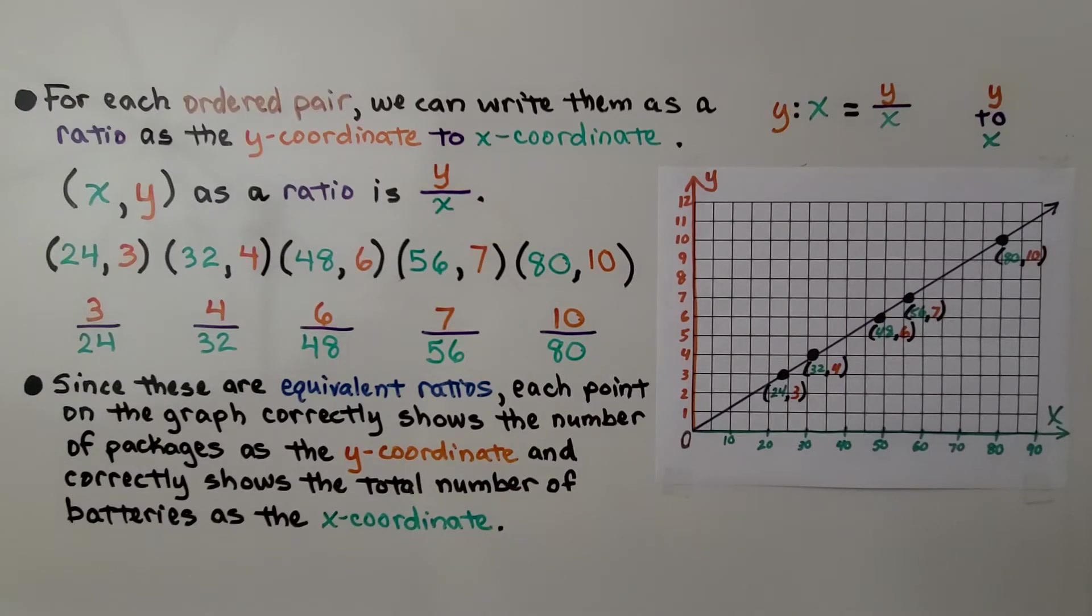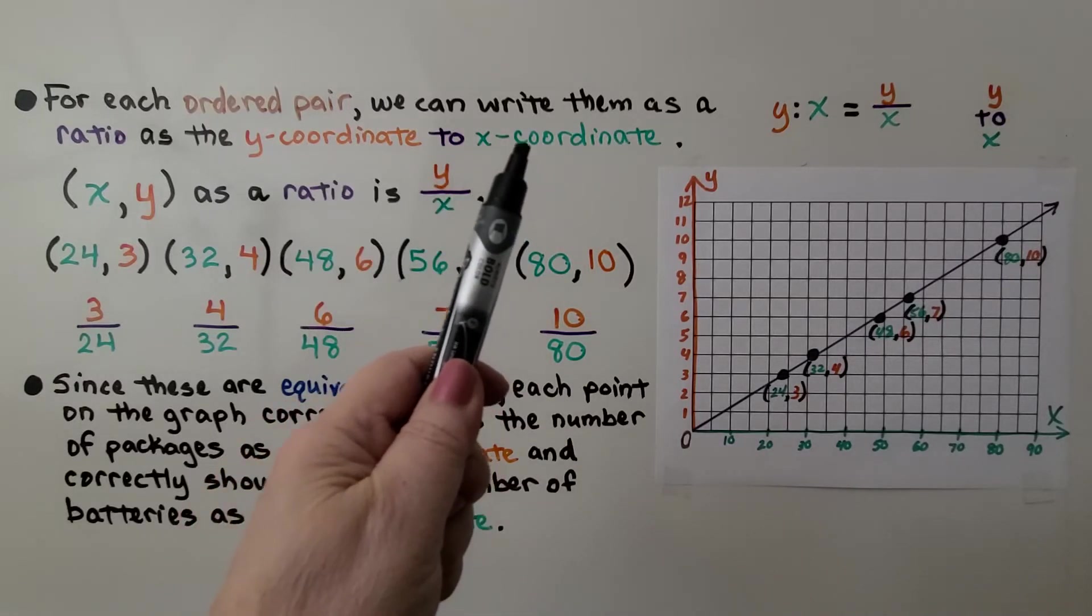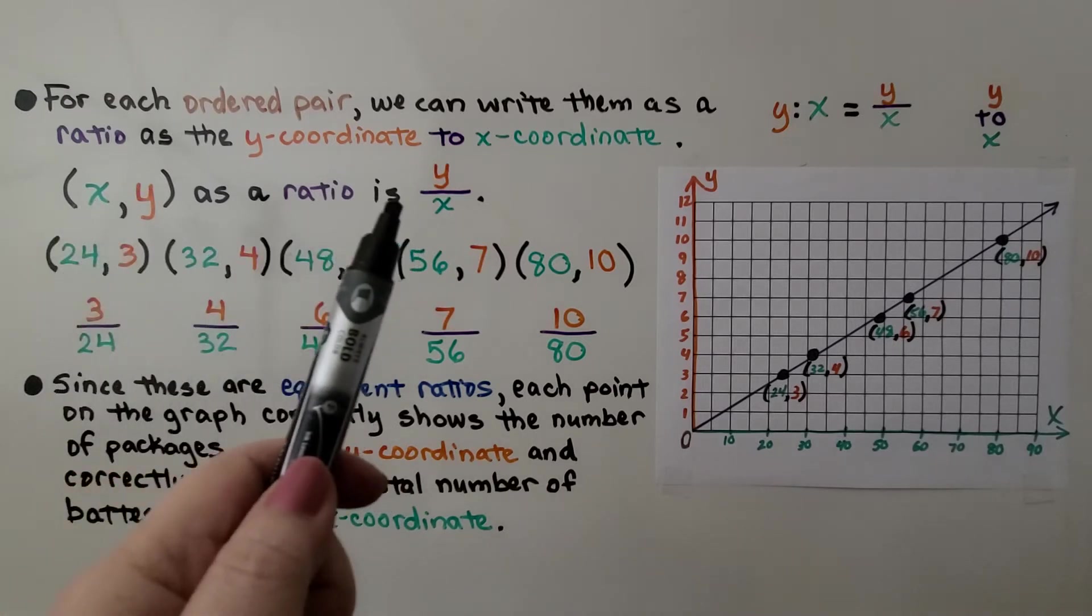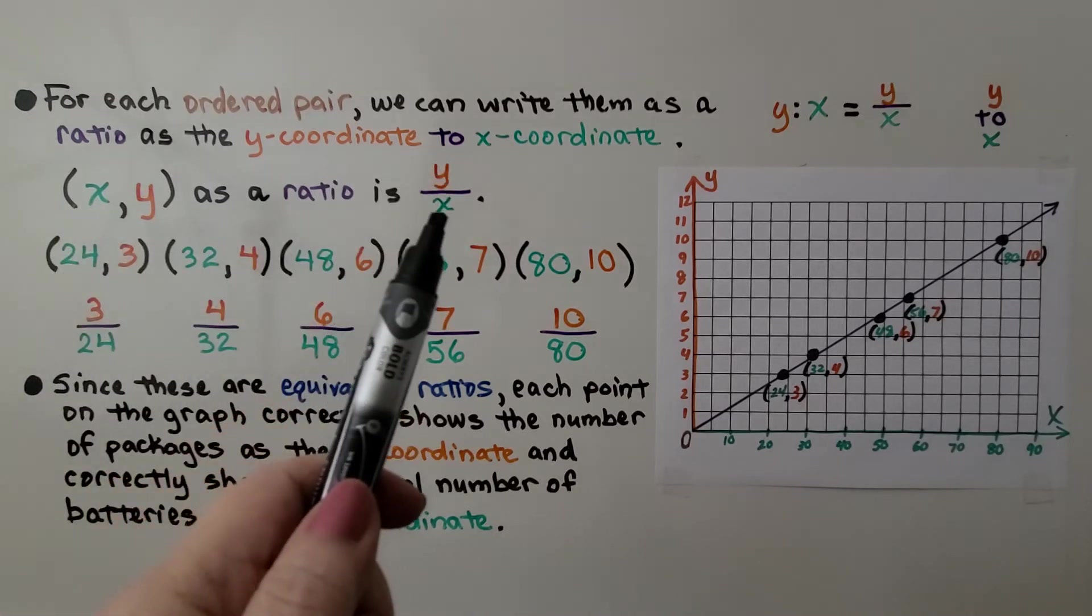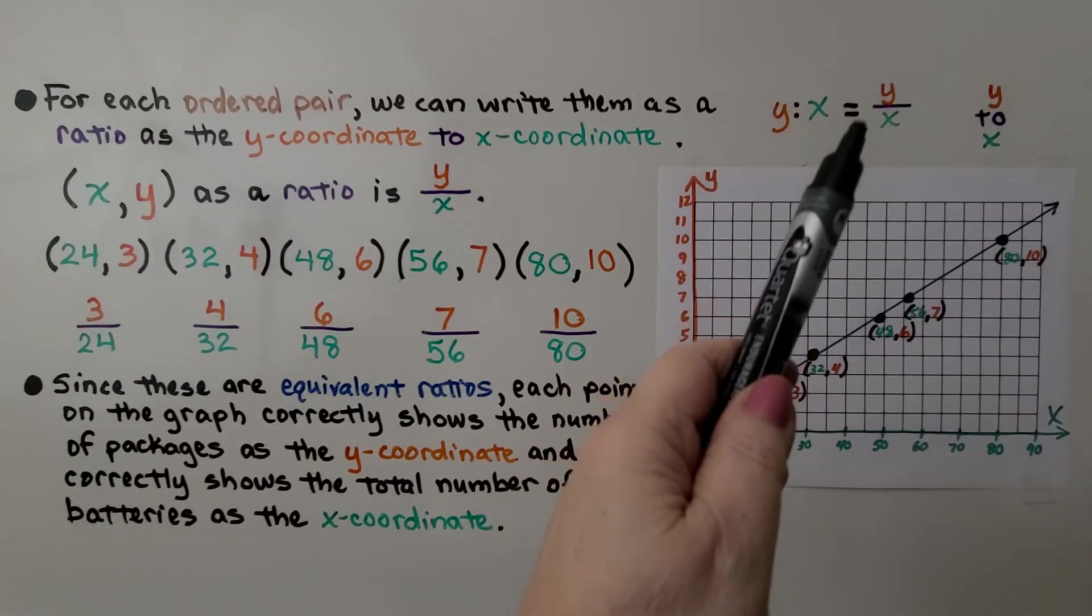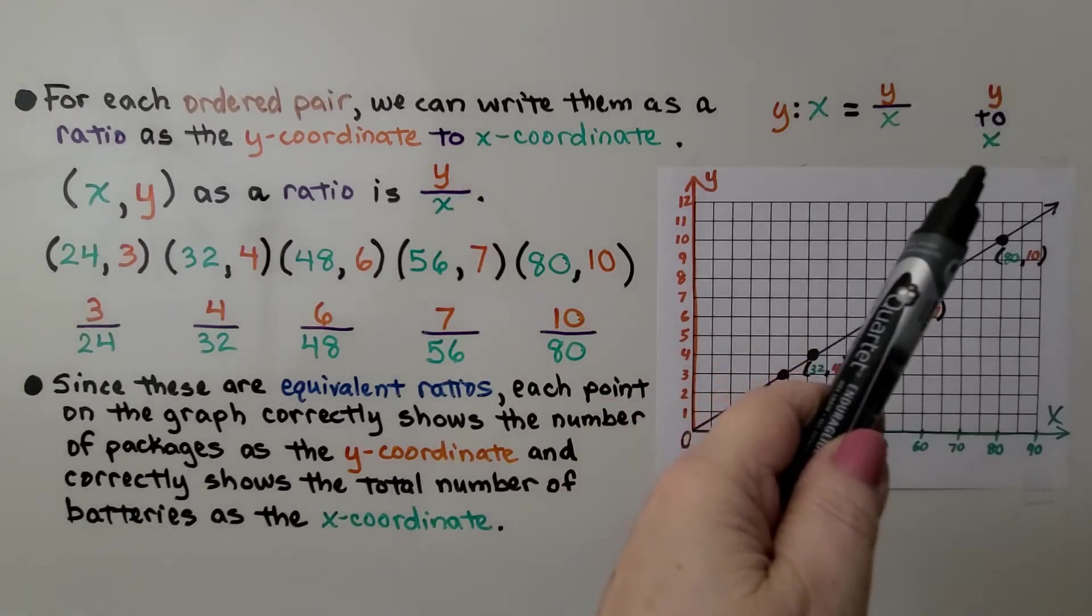For each ordered pair, we can write them as a ratio as the y coordinate to the x coordinate. So remember, in an ordered pair, we have our x first and then our y, but as a ratio, it's y over x. It's y to x, the y coordinate to the x coordinate. It's y over x, y to x.